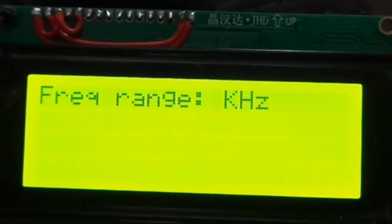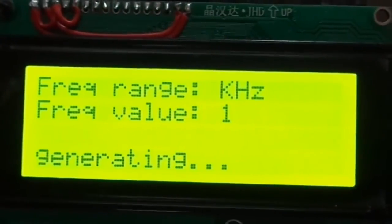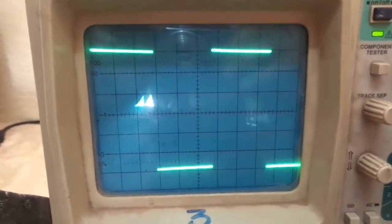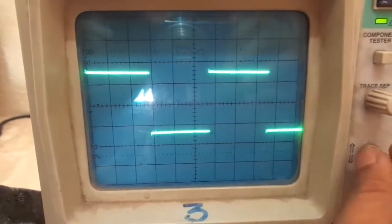Next, we will demonstrate the function generator module. We will generate a square wave. The frequency range and the frequency can be selected. The generated wave can be seen on the oscilloscope. It is a wave of 1 kHz frequency.